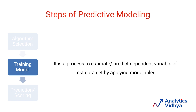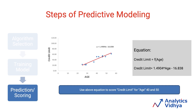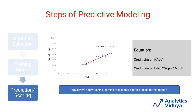Once you have selected an algorithm and trained your model, the next question is how to use this model to make predictions in the future. Coming back to our example, we substitute the age value in the equation to get the predicted value. For age 40, substituting into the equation gives a credit limit of 42.778. For age 50, we get 57.682. As you can see, the model has predicted a higher credit limit for age 50 than for age 40. This brings us to the close of the predictive modeling step.